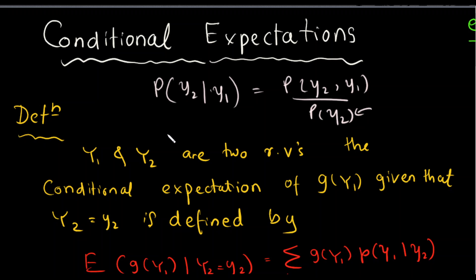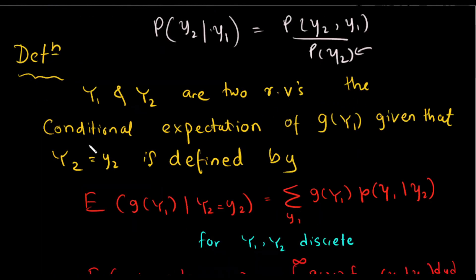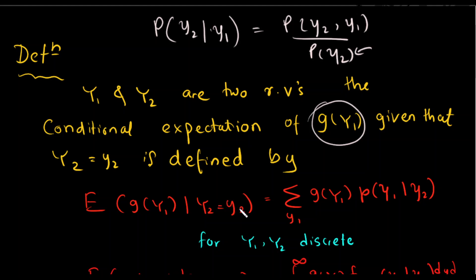We can define a little bit. We will talk about random variables. We will talk about the conditional expectation of g(y1), where y1 is a random variable. We define conditional expectation of g(y1) given y2 as the summation of g(y1) times the conditional probability of y1 given y2.